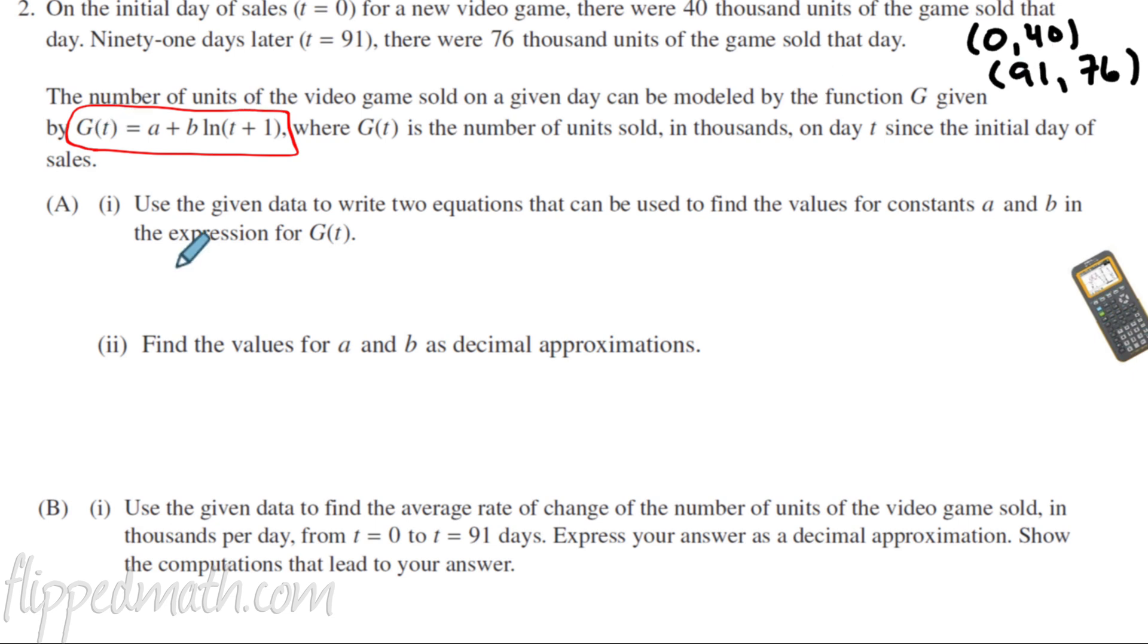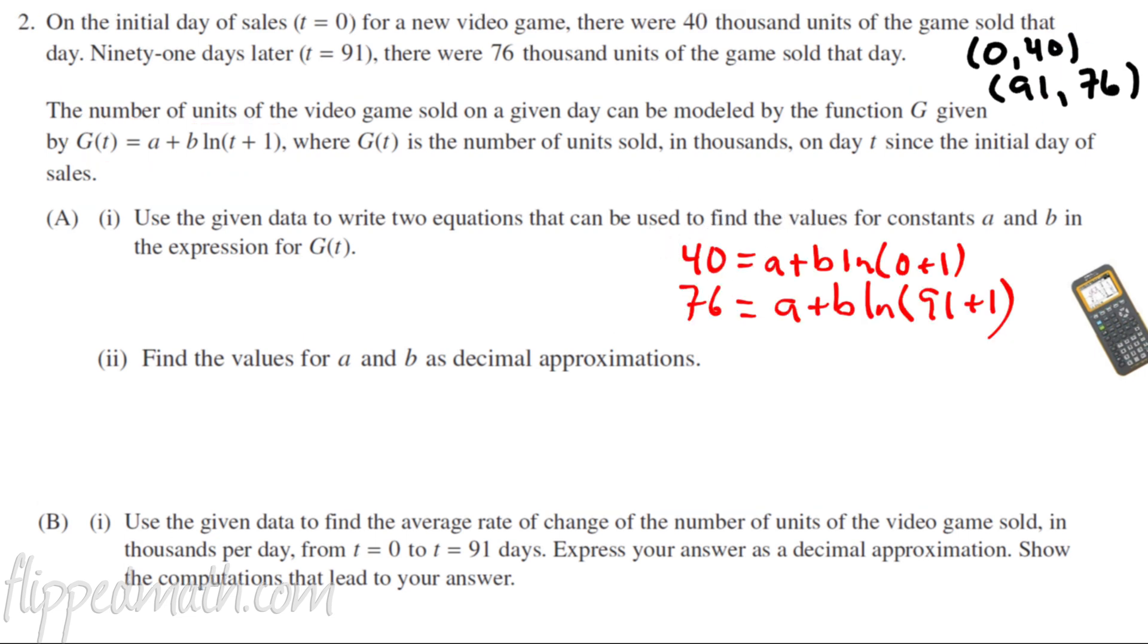So part A1 says use the given data, which we came up with these points, to write two equations. So here are the two equations that I have. Look, here's where I sub the values in. Zero, 40, and 91, 76. And they're going right into this equation right here for T and G. So just sub in those numbers. Look, I didn't even figure out zero plus one. Don't figure it out. Just leave it. If you leave it, that is an equation that can be used to find the variables for A and B. So that is part A, number one. You get full credit for that.